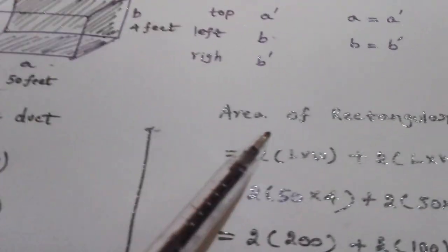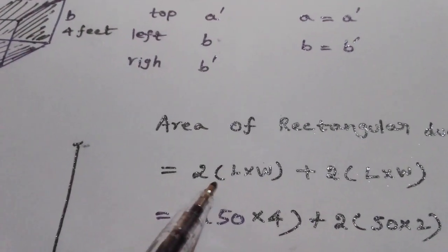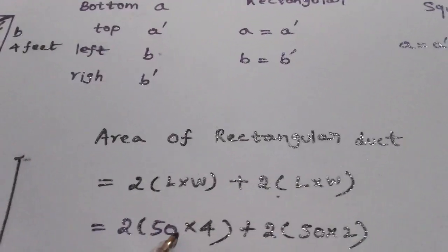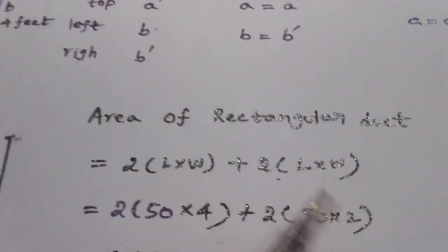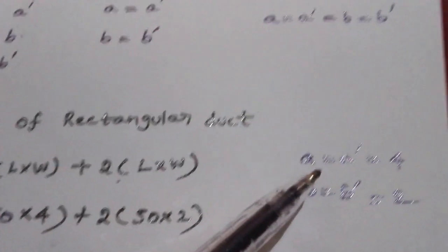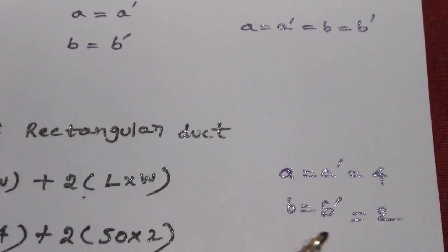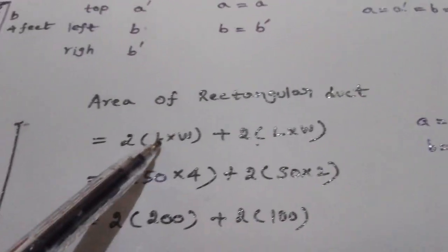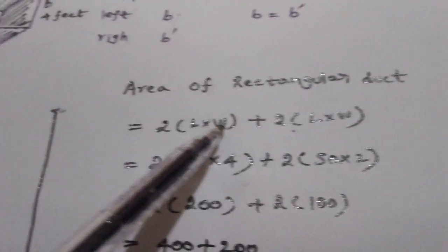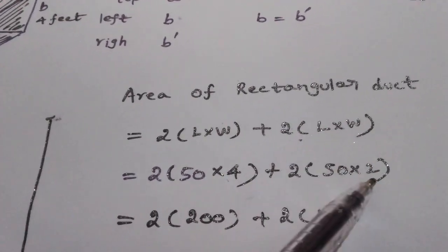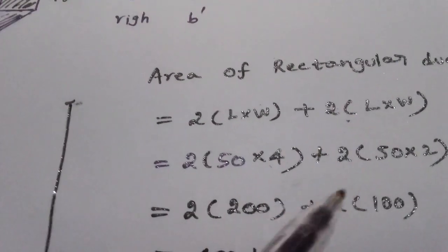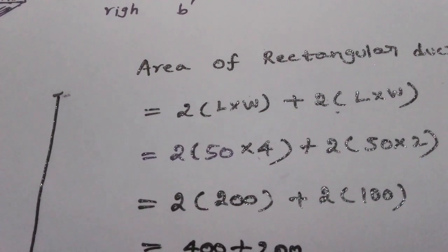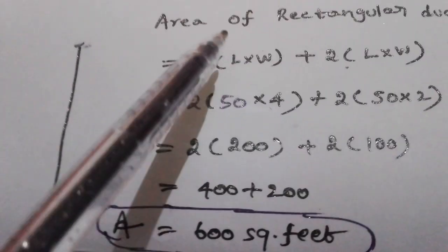This is the rectangle. The rectangle has opposite sides that are equal. So if you have two lengths and two widths, you add two sides and add two sides. This gives you two into length plus two into width. For example, if the length is 50 feet and the width is 4 feet: 50 into 4 is 200, into 2 gives 400; plus 50 into 2 into 2 gives 200. So 400 plus 200 equals 600 square feet. That is the area of the rectangle duct.